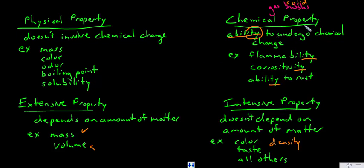Chemical properties are the abilities to undergo chemical change. Flammability, the ability to combust. Corrosivity, the ability to corrode something. The ability to rust. All of these things, the abilities to react in some way, they end in -ity. Either ability or the suffix -ity. Corrosivity.